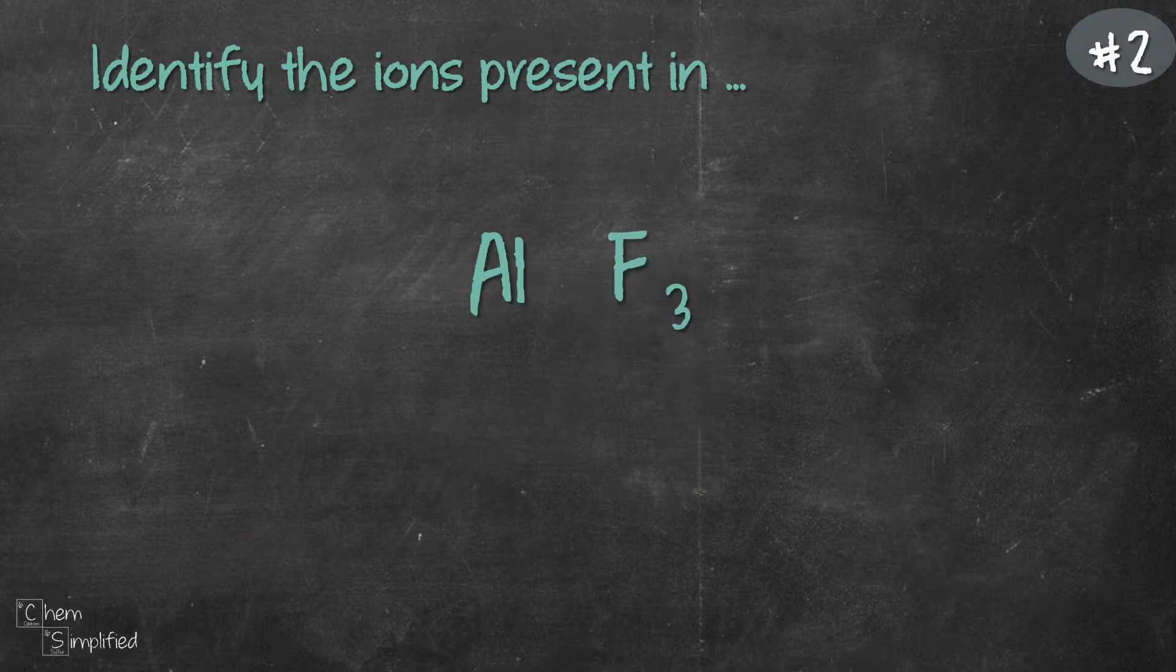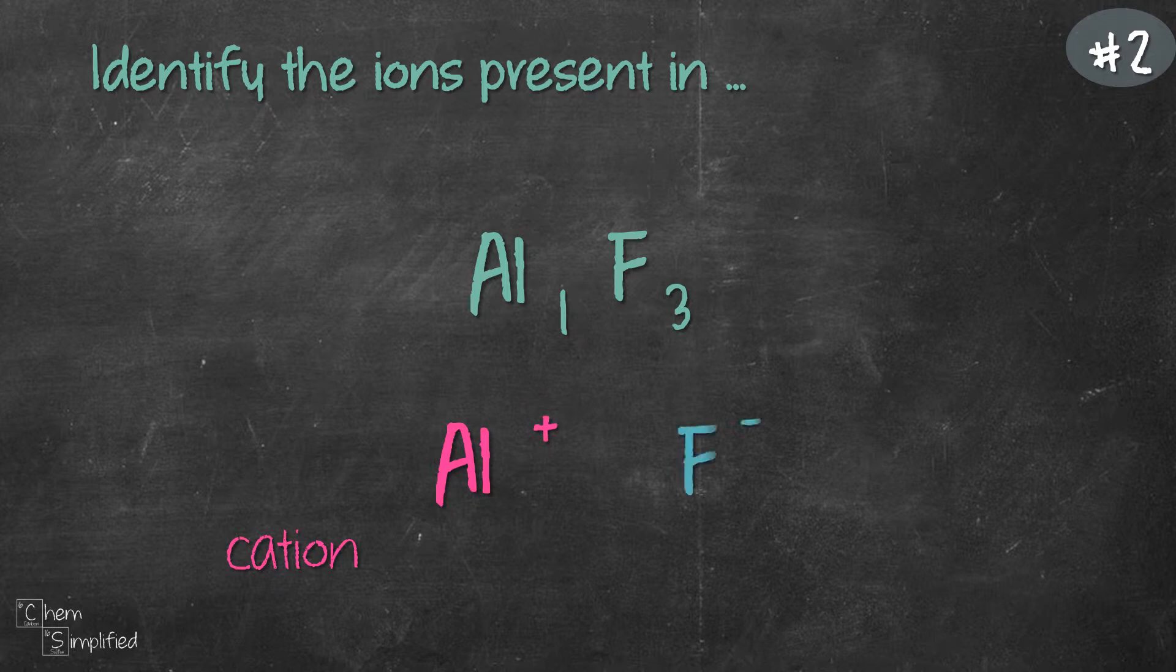Now we move on to our second example, which is AlF3. We know that we actually have 1 Al and the cation is going to be Al with some positive charge and the anion is going to be F minus.